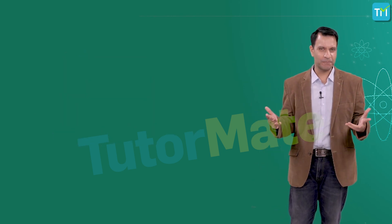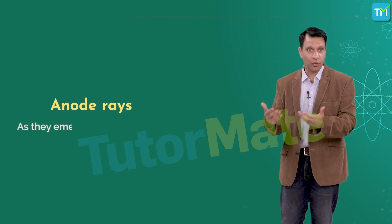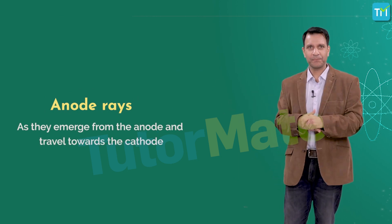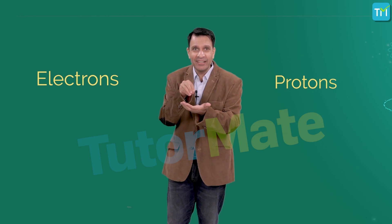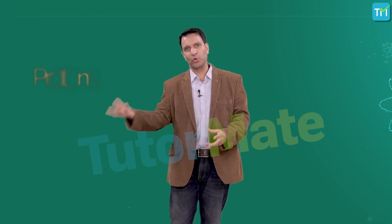These rays were named canal rays because they passed through the holes of the cathode. Goldstein found that these rays are made up of another subatomic particle, later labeled as proton by Rutherford. These rays are also called anode rays, as they emerge from the anode and travel towards the cathode. It then became necessary to find out how electrons and protons were arranged inside the atom — noting that the neutron had not yet been discovered at this time.